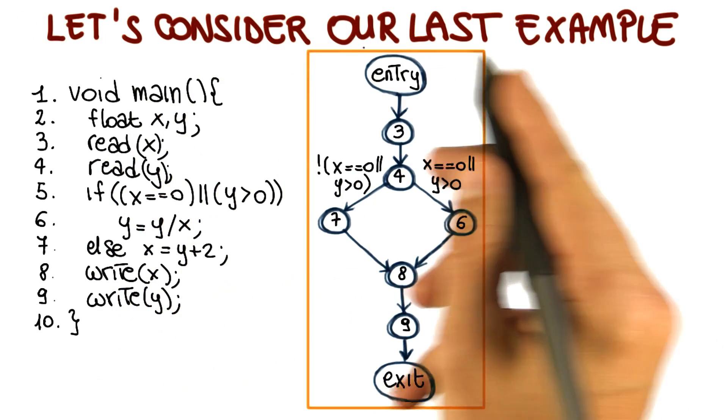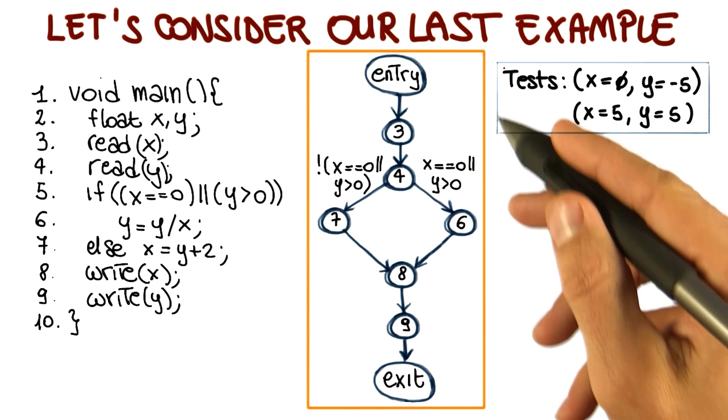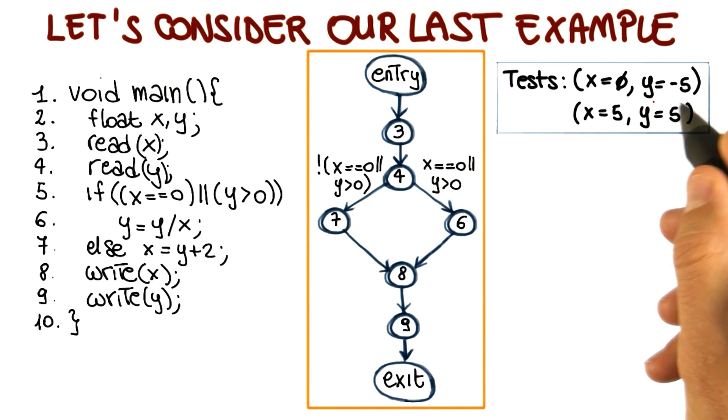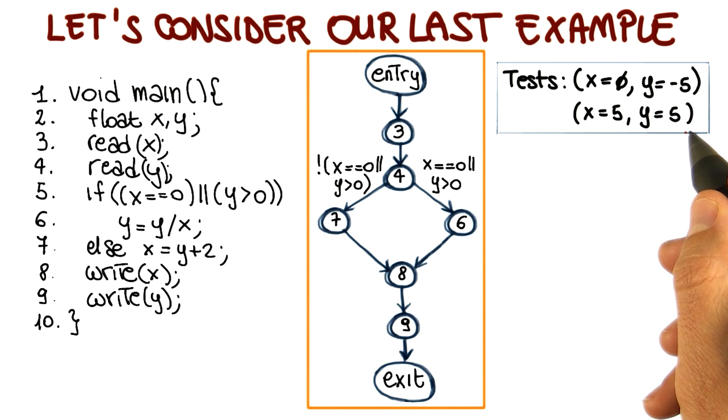Now let's consider again our last example and use a different test suite this time. We still have two tests, but the first one has x = 0 and y = -5, and the second one has x = 5 and y = 5.